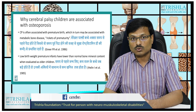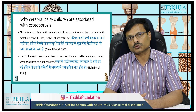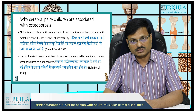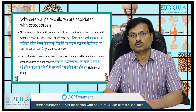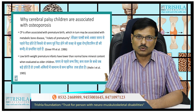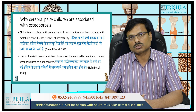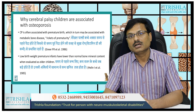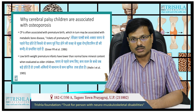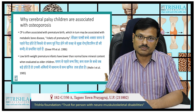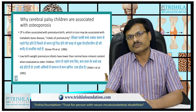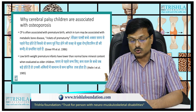Why are cerebral palsy children associated with osteoporosis? There is a much higher chance of osteoporosis at a very early age. Cerebral palsy is often associated with premature birth, and a premature birth child will have low bone quality — known as rickets of prematurity. They will have less vitamin D and less bone matrix, leading to a different kind of metabolic bone disease. Premature infants will have lower than normal bone mineral content when assessed at older age groups.